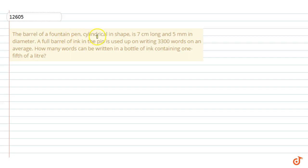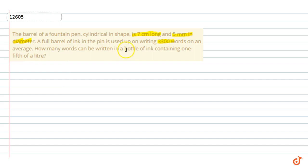The barrel of a fountain pen, cylindrical in shape, is 7 cm long and 5 mm in diameter. A full barrel of ink in the pen is used to write 3300 words on an average. So how many words can be written in a bottle of ink containing 1 fifth of a liter?